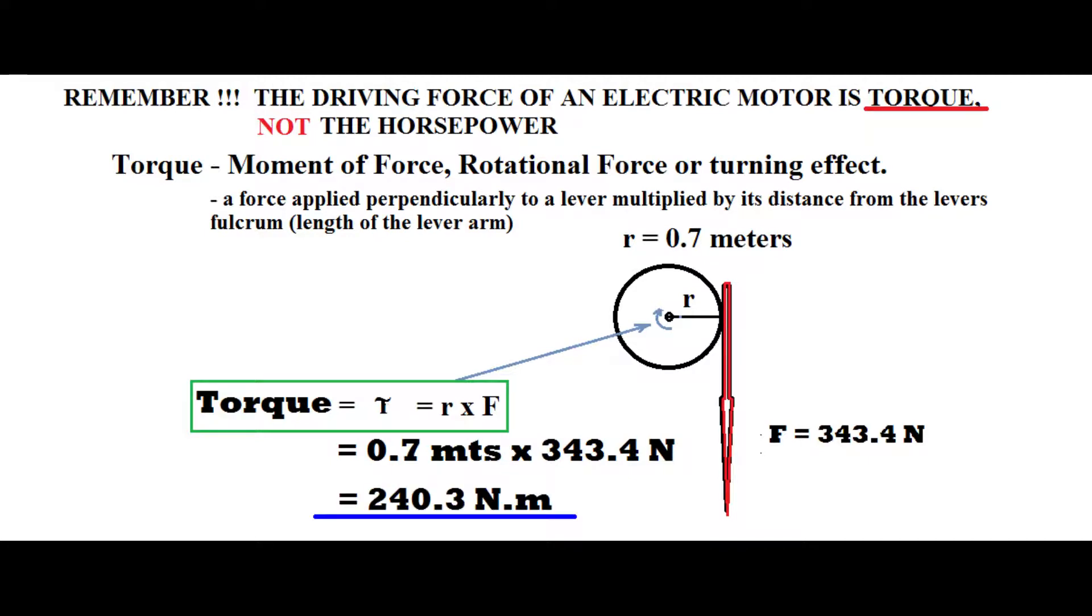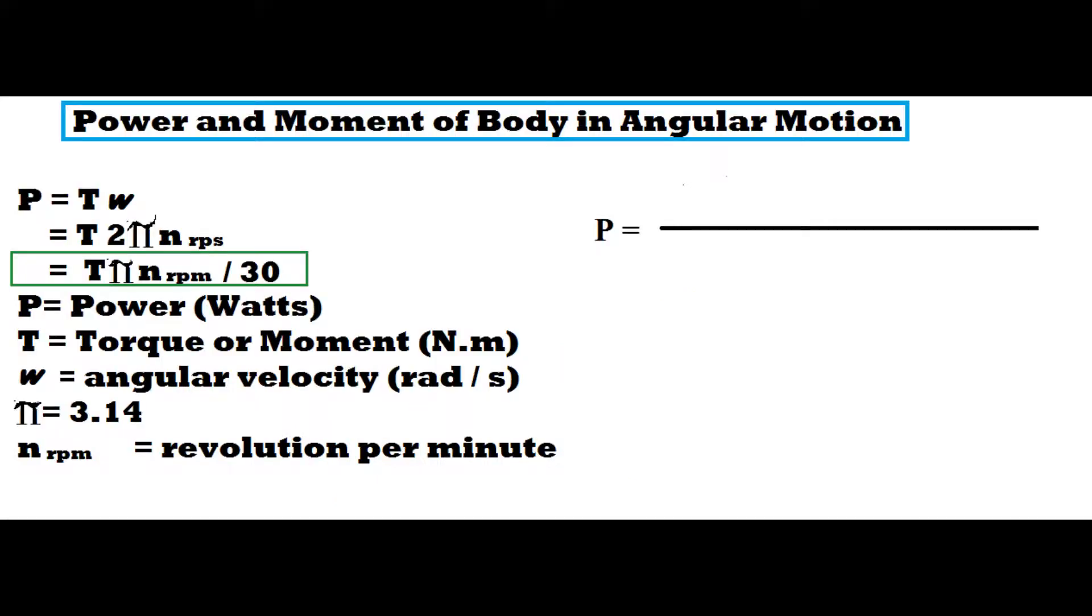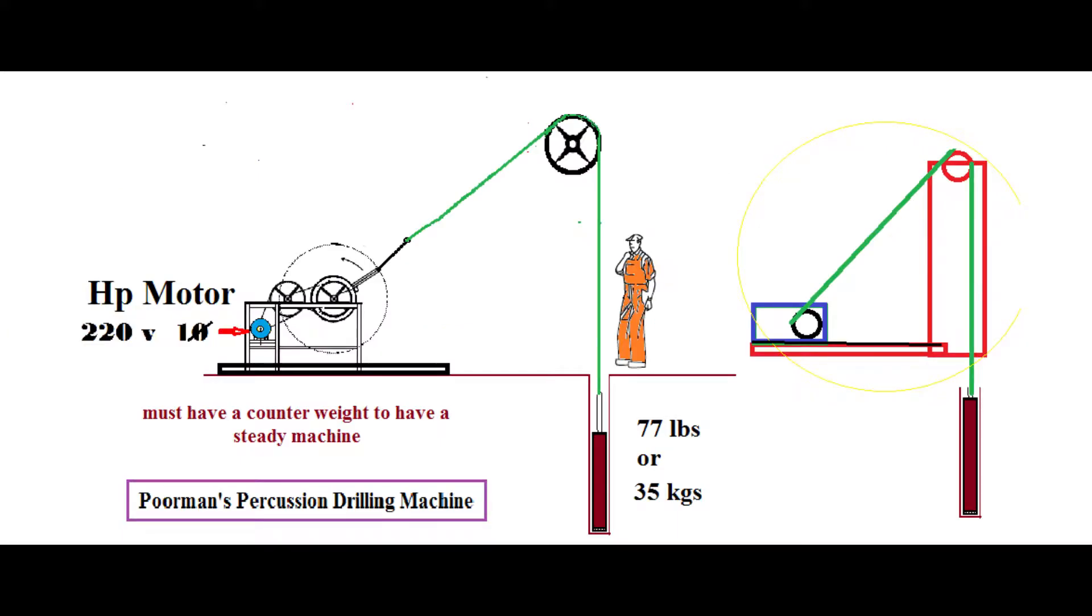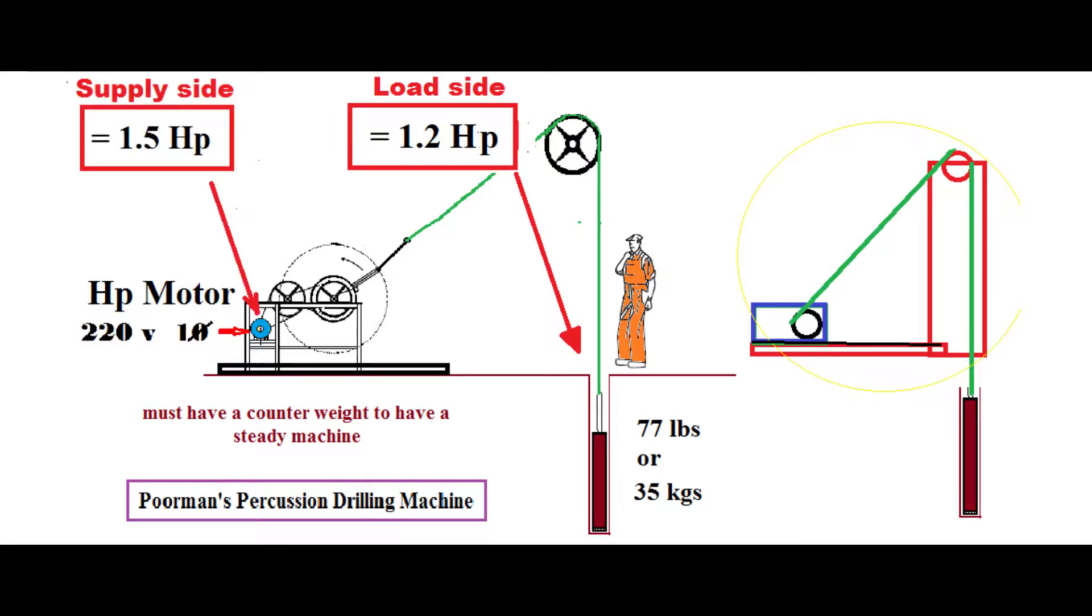So it equals 240 newton meter. With that data we can compute the power. And the formula of power is equals to torque times the angular velocity. So if we convert it to RPM, then power equals torque times pi times speed in RPM over 30. We substitute our data, the equivalent power in watts is 880 watts or 1.2 horsepower in load side. So the supplies to have a pulling effect - we can use 1.5 horsepower motor. So you can also use a 2 horsepower motor so that the efficiency is much higher.